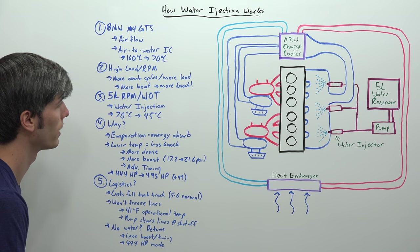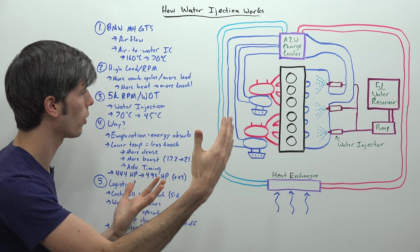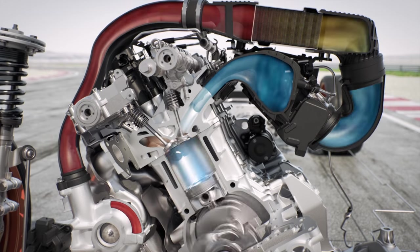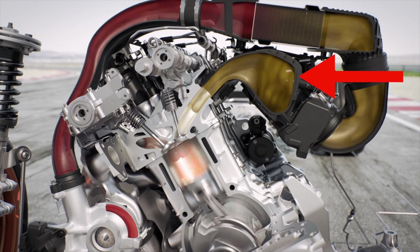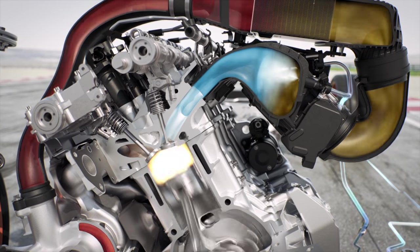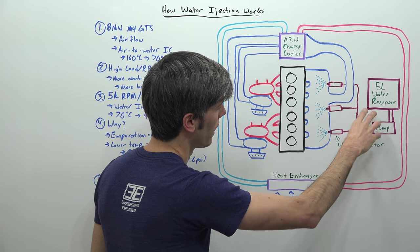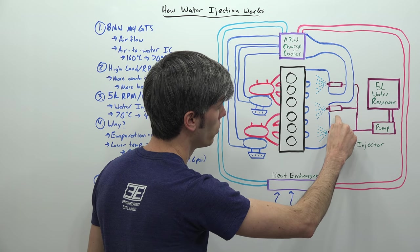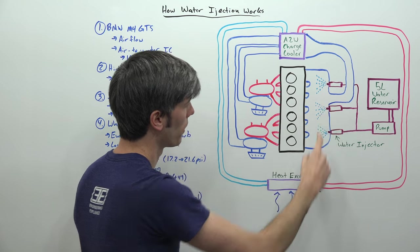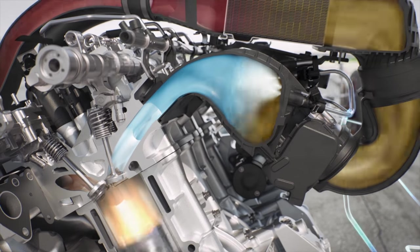Well BMW does it by implementing this water injection system. And so if you increase above 5,000 RPM and you're flooring it, so both conditions have to be met, you have to be above 5,000 RPM and flooring it, then it's going to start to use this water injection system. So you've got this 5 liter water reservoir, it's got a pump, and then that pump, this is actually in the trunk of the car, so far back from the engine, but then it will pump that water all the way to these injectors which are placed within the intake manifold. There's three injectors and they will spray that water in at about 145 PSI.